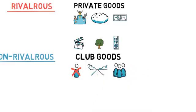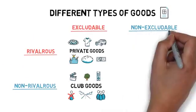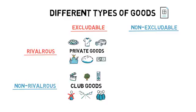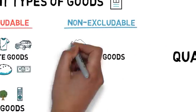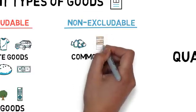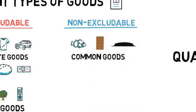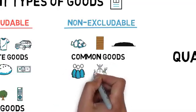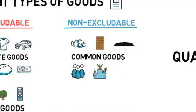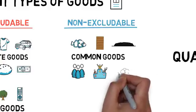So how about non-excludable goods that are rivalrous in nature? This intersection represents common goods such as fish, timber or coal. Everyone has access to these resources, but there is an inherent competition when it comes to collecting them due to potential overuse or congestion.